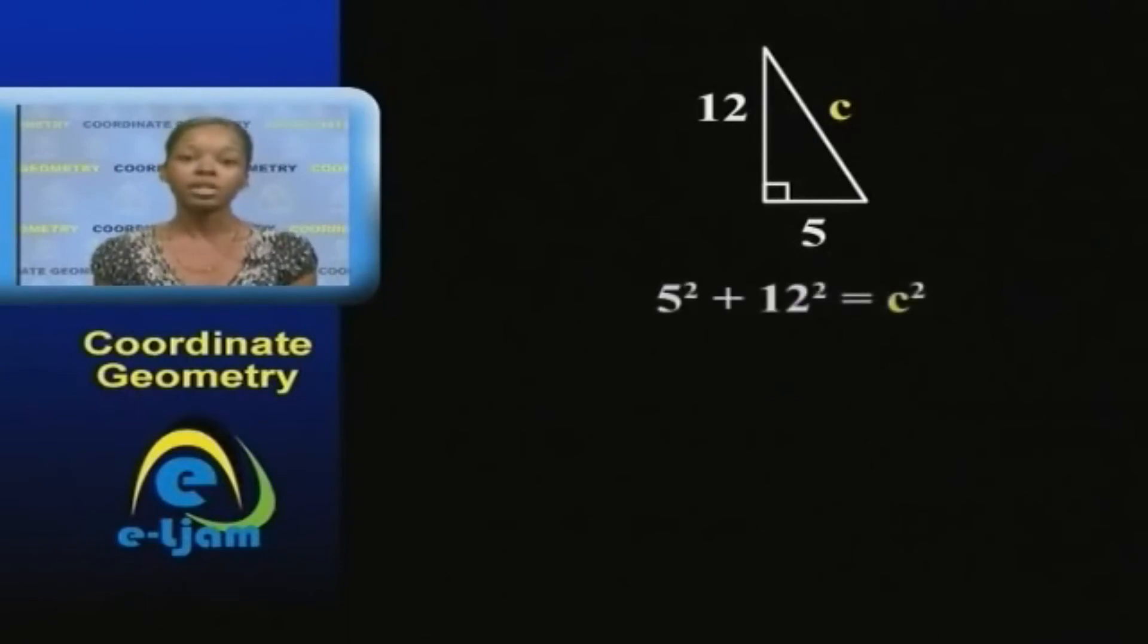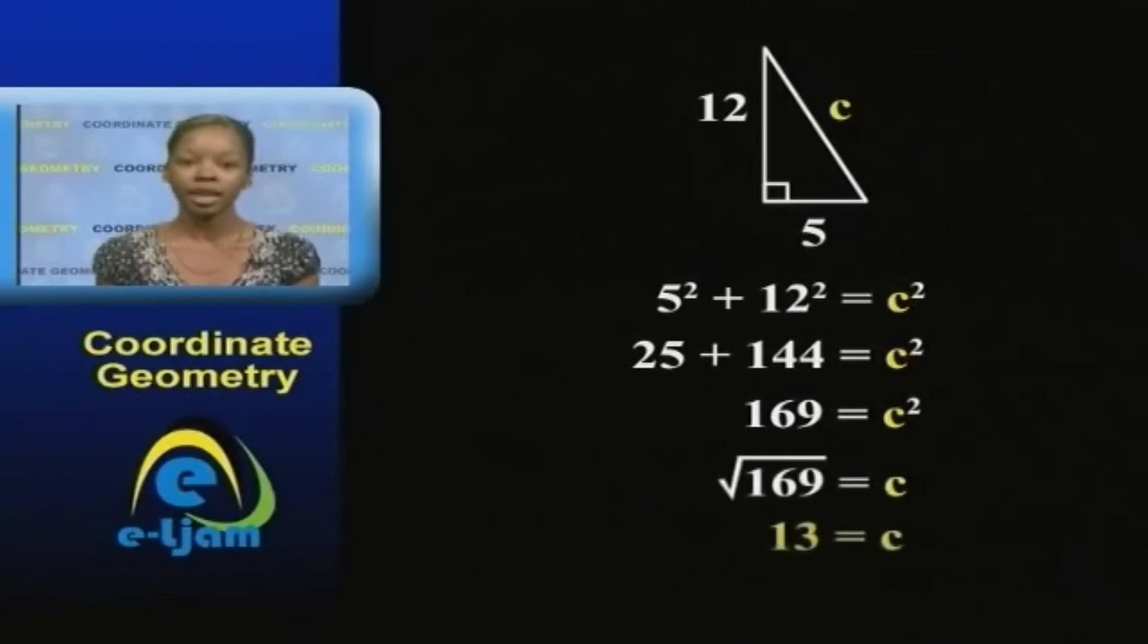So, 5 squared plus 12 squared equals C squared. C squared equals 169. To find the value of C, which is the hypotenuse, we have to find the square root of 169, which is 13.